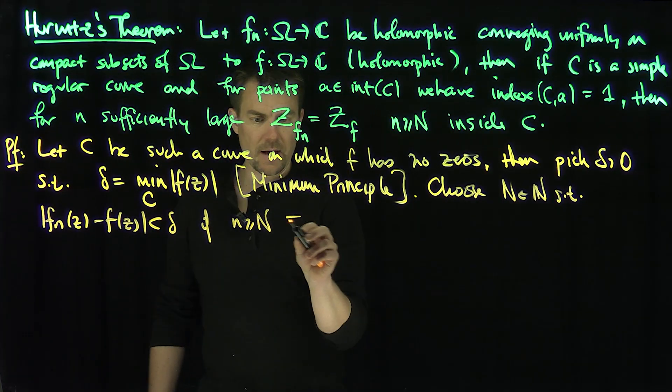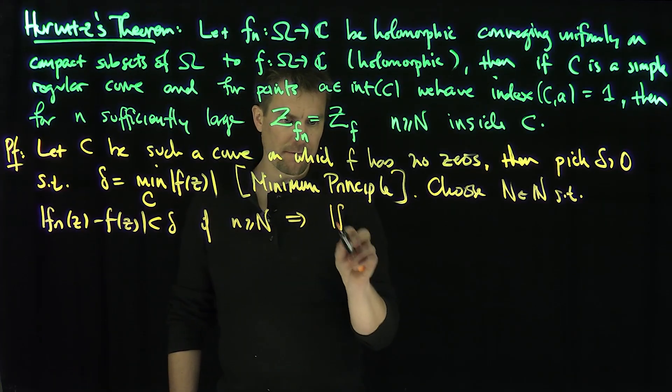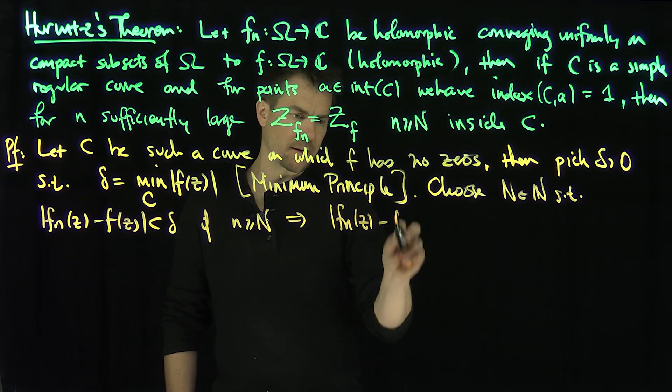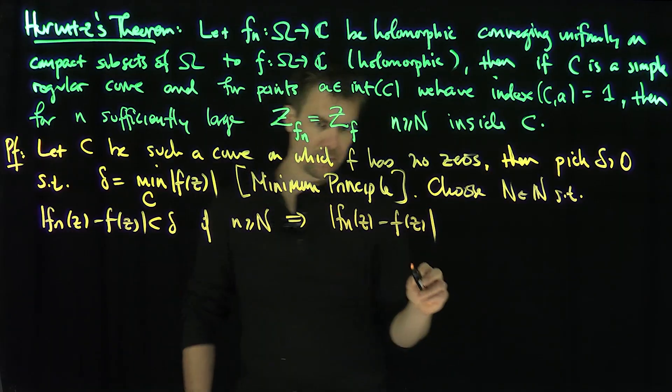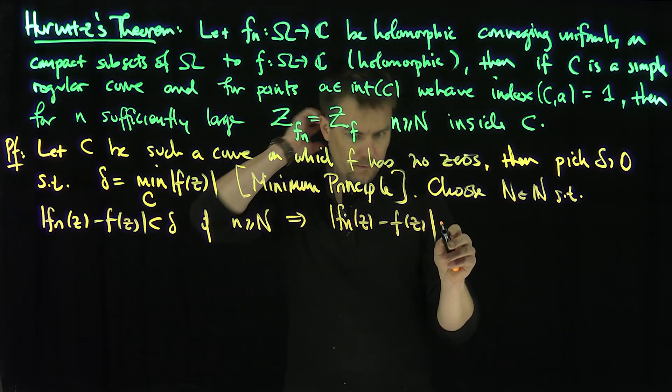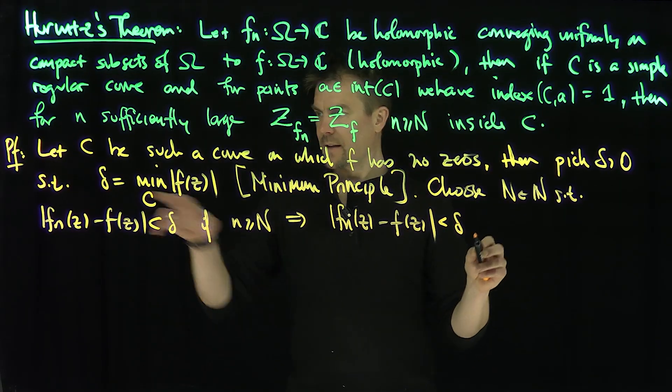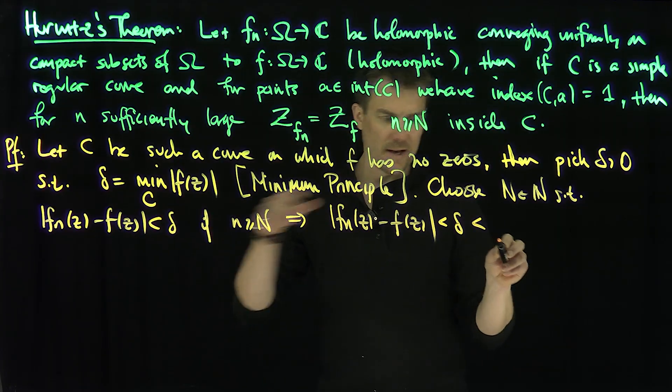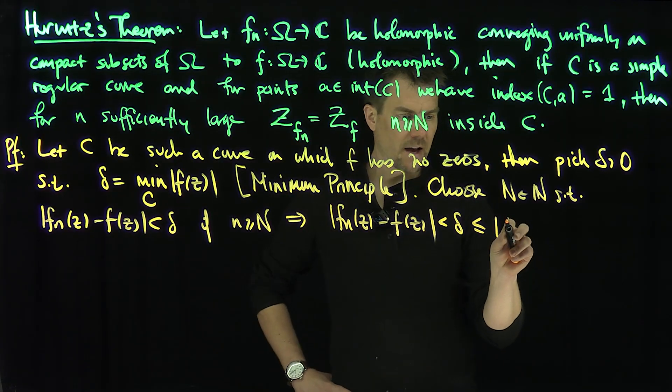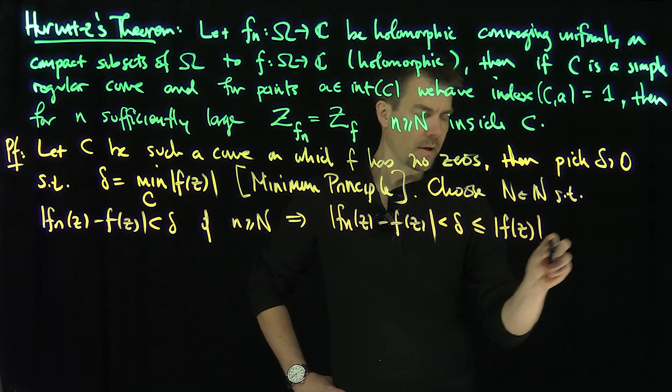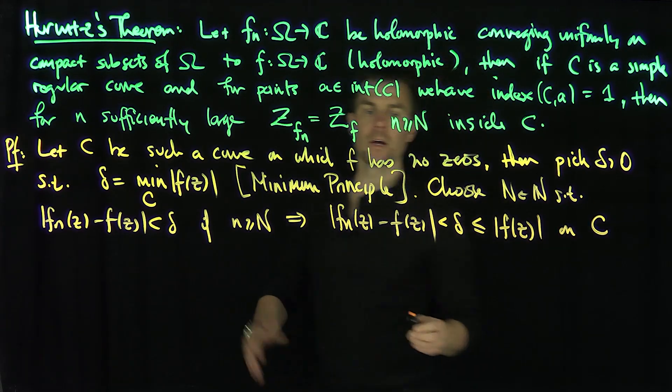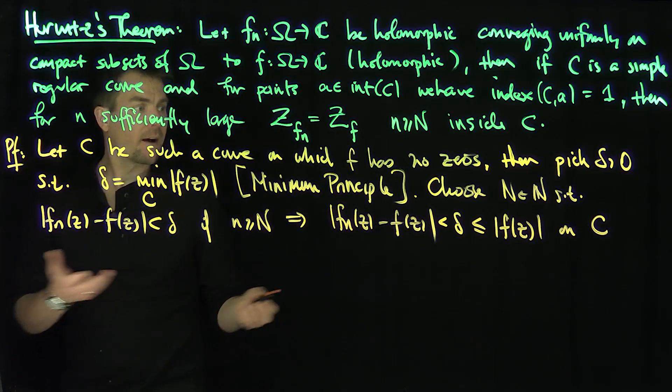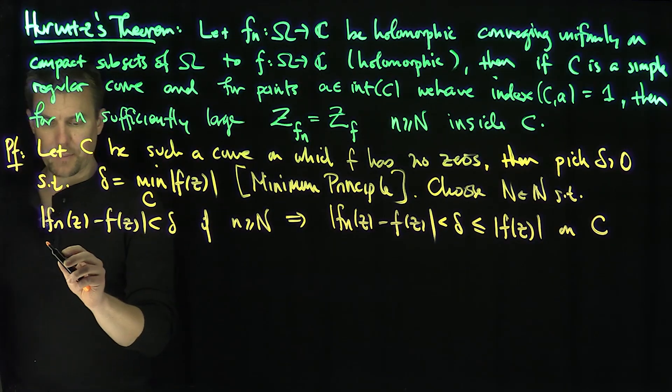Well if that's the case, then this implies |fn(z) - f(z)| is less than delta, and delta is the minimum, so this is less than or equal to |f(z)| on C. And so it says that fn and f have the same number of zeros inside C, hence by Rouché,